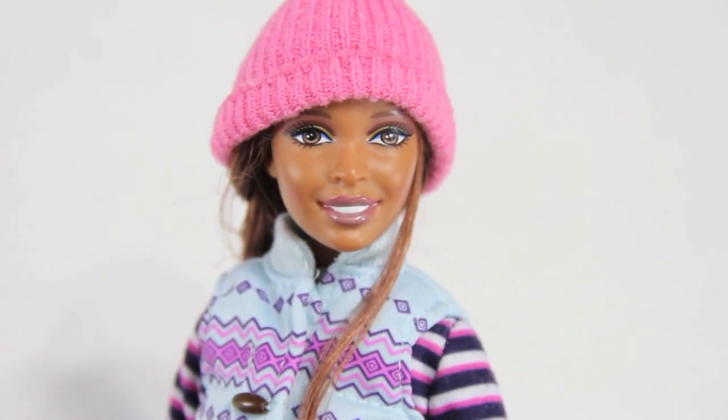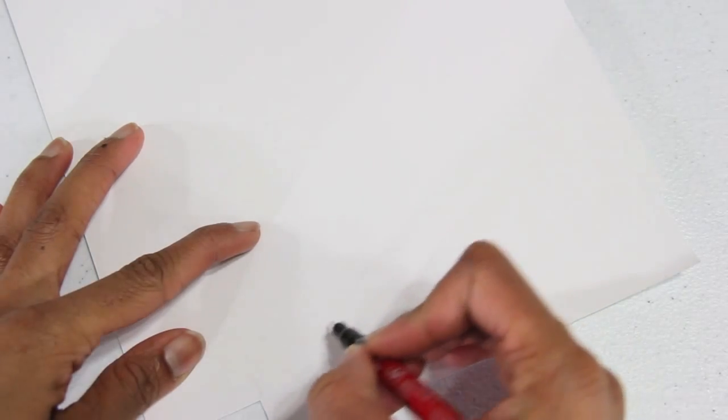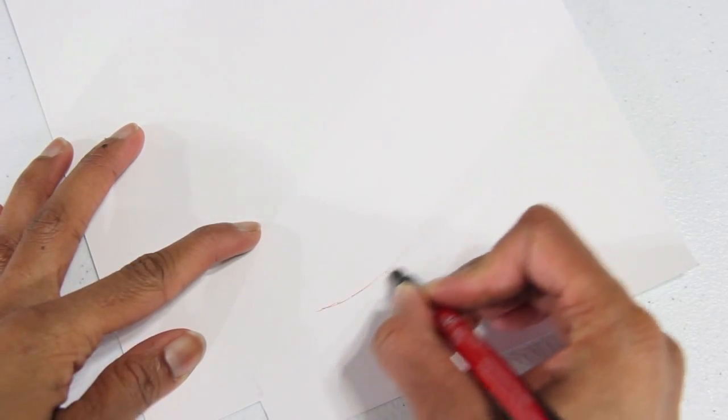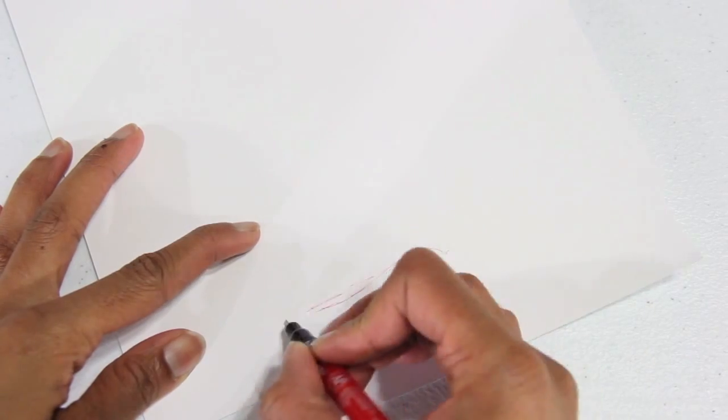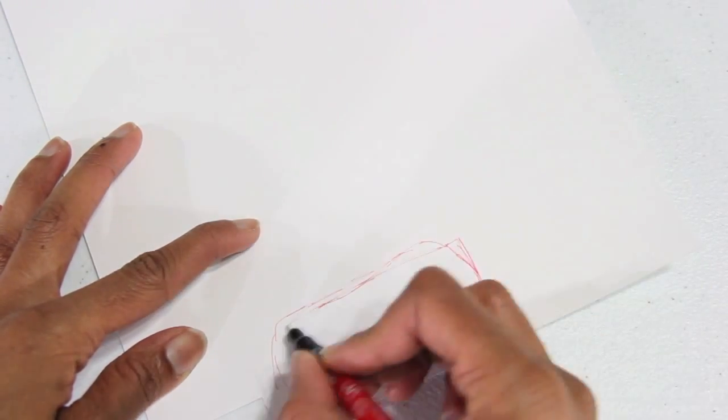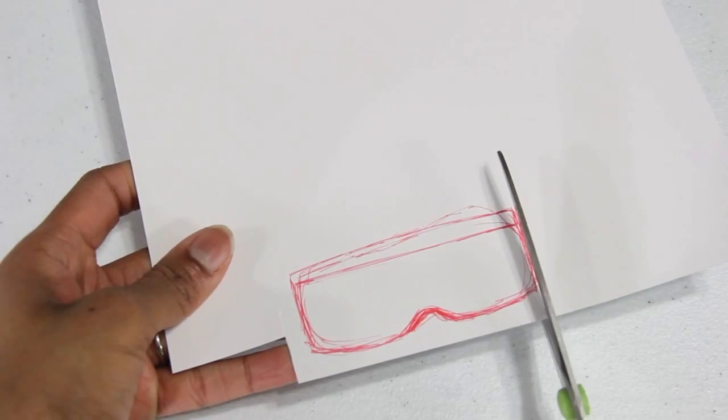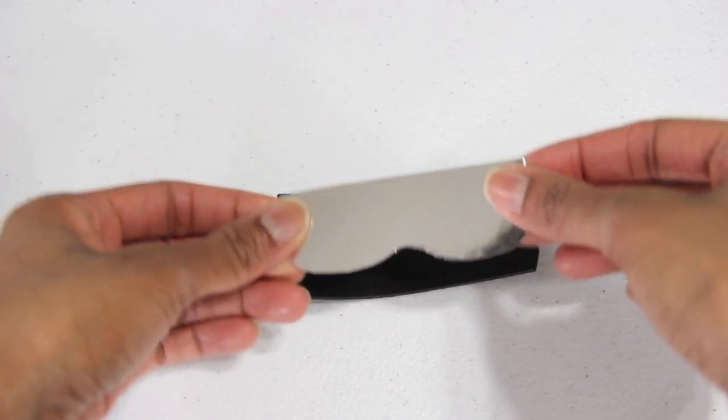For a smaller doll, I would use a baby sock. On a piece of metallic scrapbook paper on the back, I draw out the shape for a pair of ski goggles. I cut it out and glue it to a piece of craft foam.